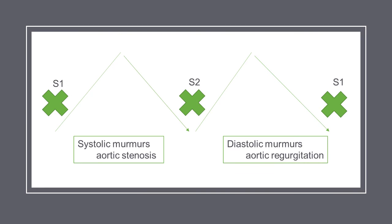Page 484 in your textbook does a nice job differentiating between the normal and abnormal range of findings for heart sounds — not something to memorize, but worth writing on a note card or having available in clinical as a reference when you hear an abnormal heart sound.